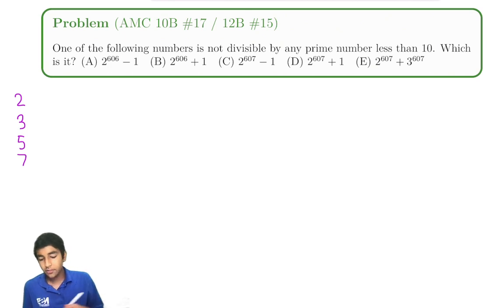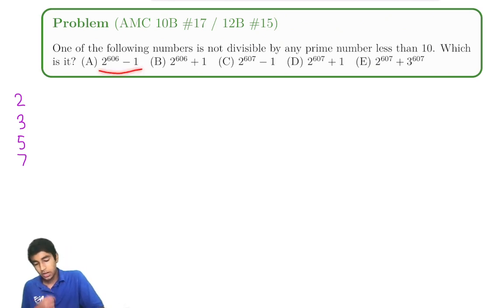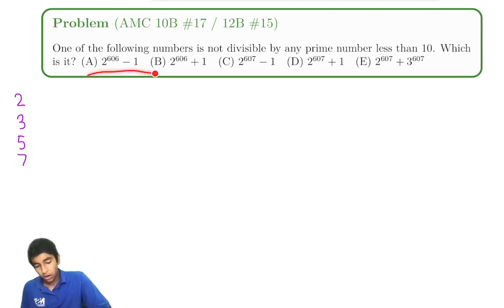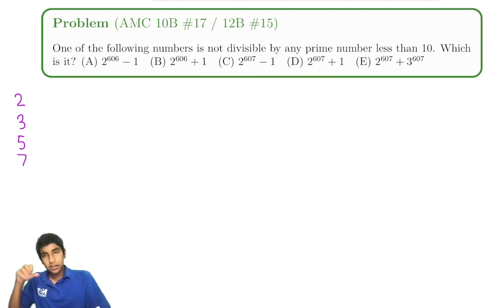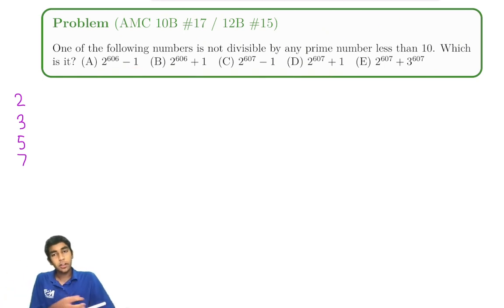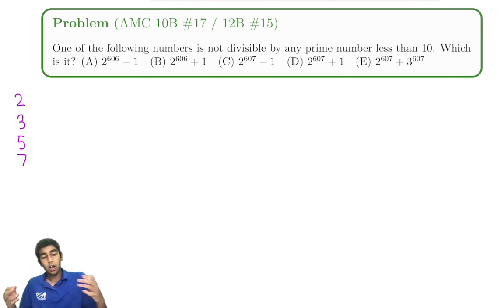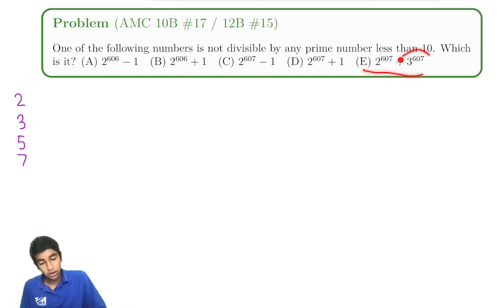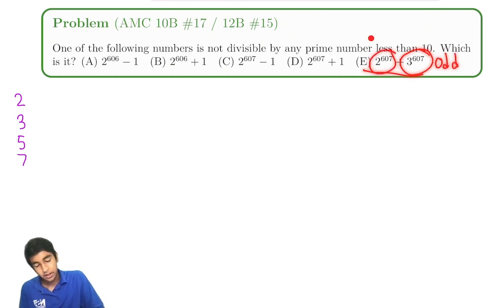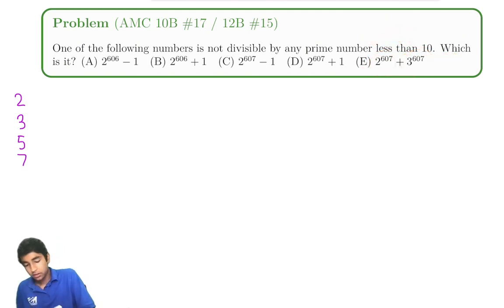First, are any of these divisible by 2? Well, all of these terms are a power of 2 plus or minus 1. A power of 2 is even and 1 is odd, so when you add or subtract them you get an odd number. Similarly, 3 to some power is odd and 2 to some power is even, so the sum is odd. None of these are divisible by 2.